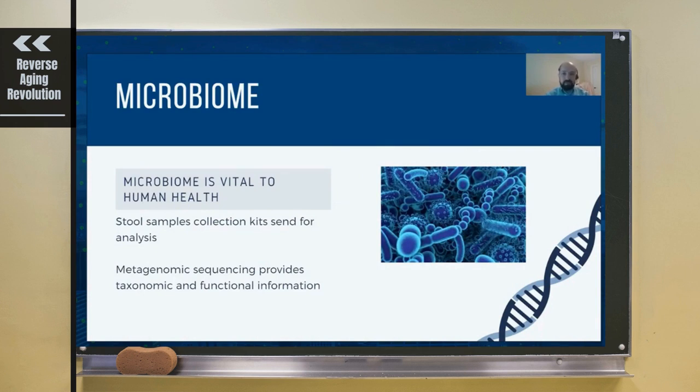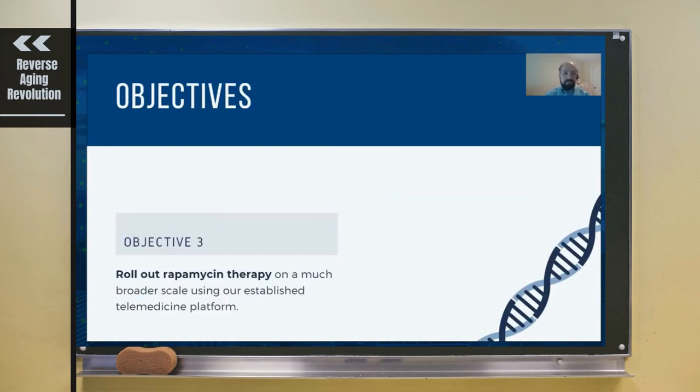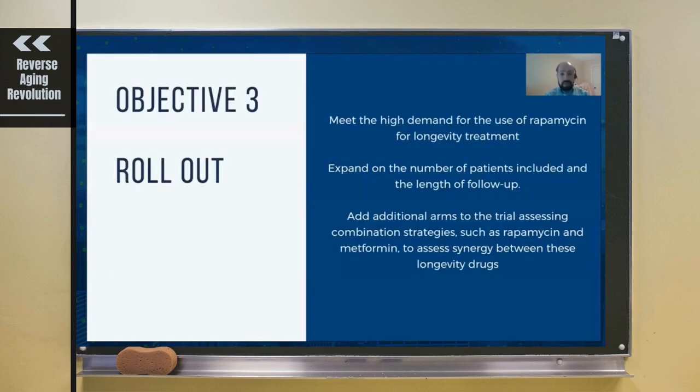Objective 3 is to help roll out rapamycin therapy on a much broader scale using our established telemedicine platform. We've gotten a lot of inquiries about including rapamycin on our telemedicine platform. Unfortunately, unlike metformin, which has a very well-established safety record, drugs like rapamycin and other experimental therapies haven't been studied as extensively and need this type of trial.